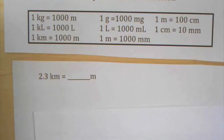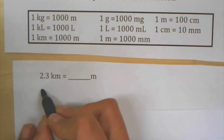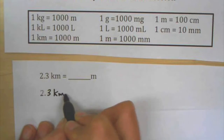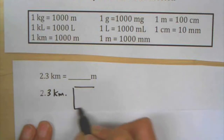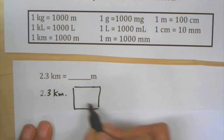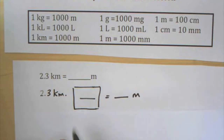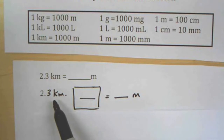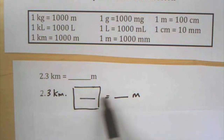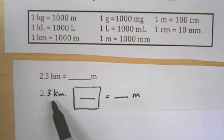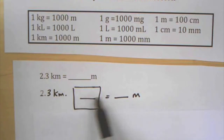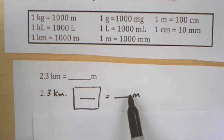We're going to use a thing called a unit giant one — multiplying by a fraction that's equal to one — to help you set the problem up. The way this works is if you took any number and multiplied by one, like six times one, it's still six. So 2.3 kilometers times one is still 2.3 kilometers, but we're changing the unit so it looks slightly different while remaining the same quantity.